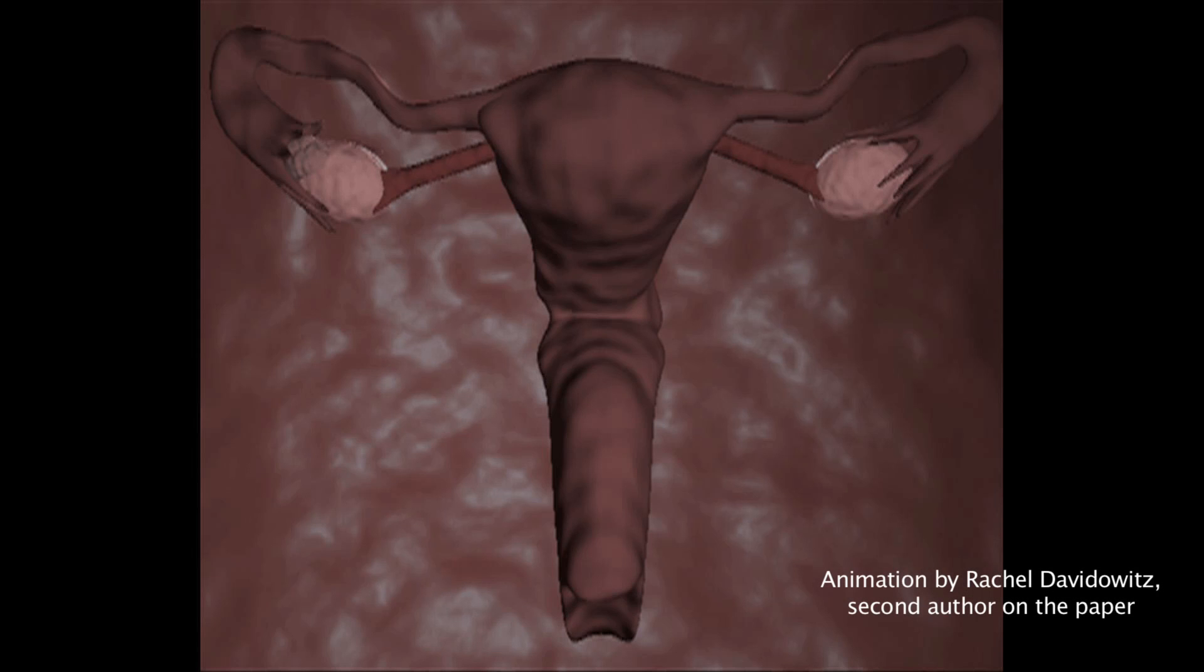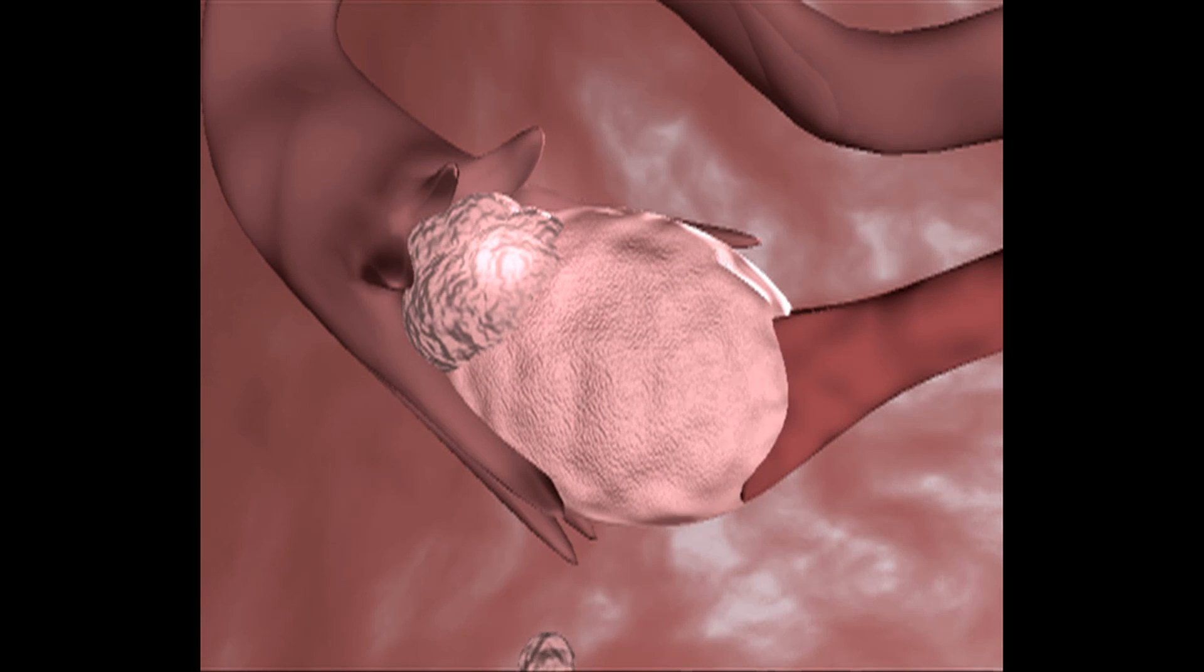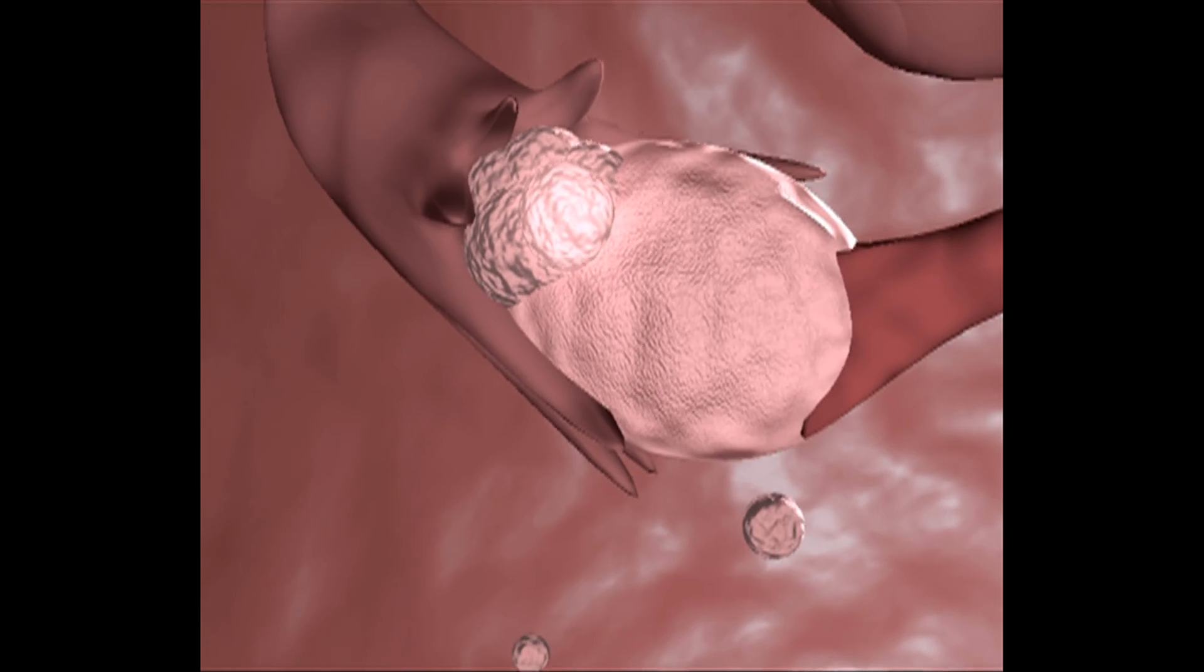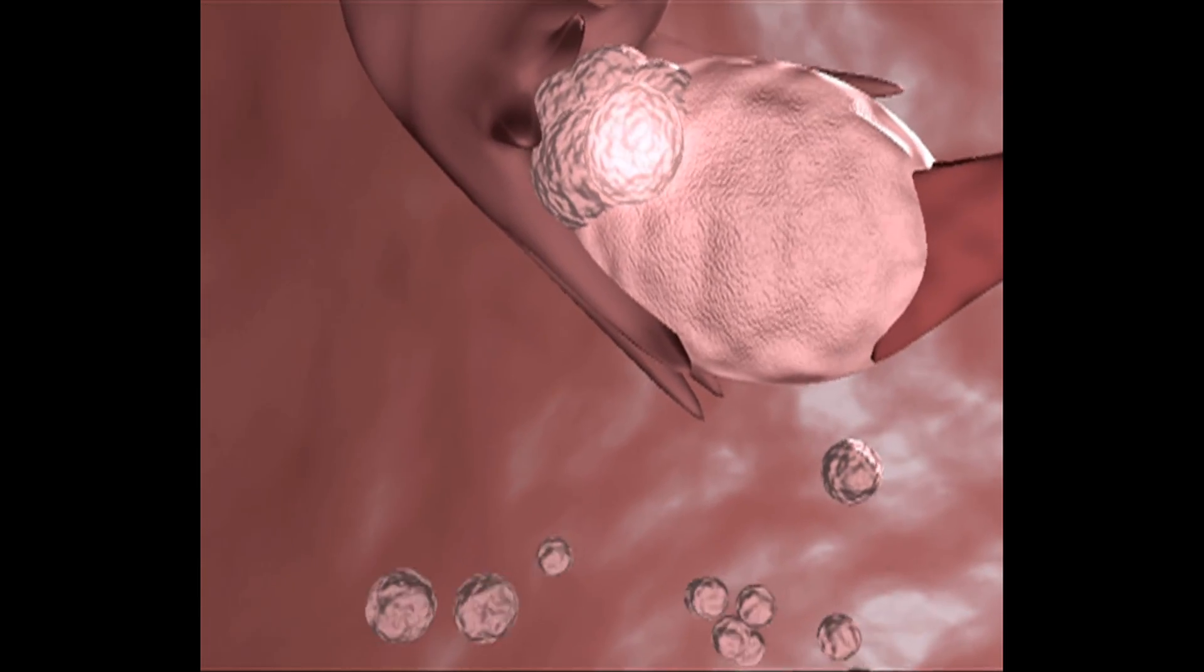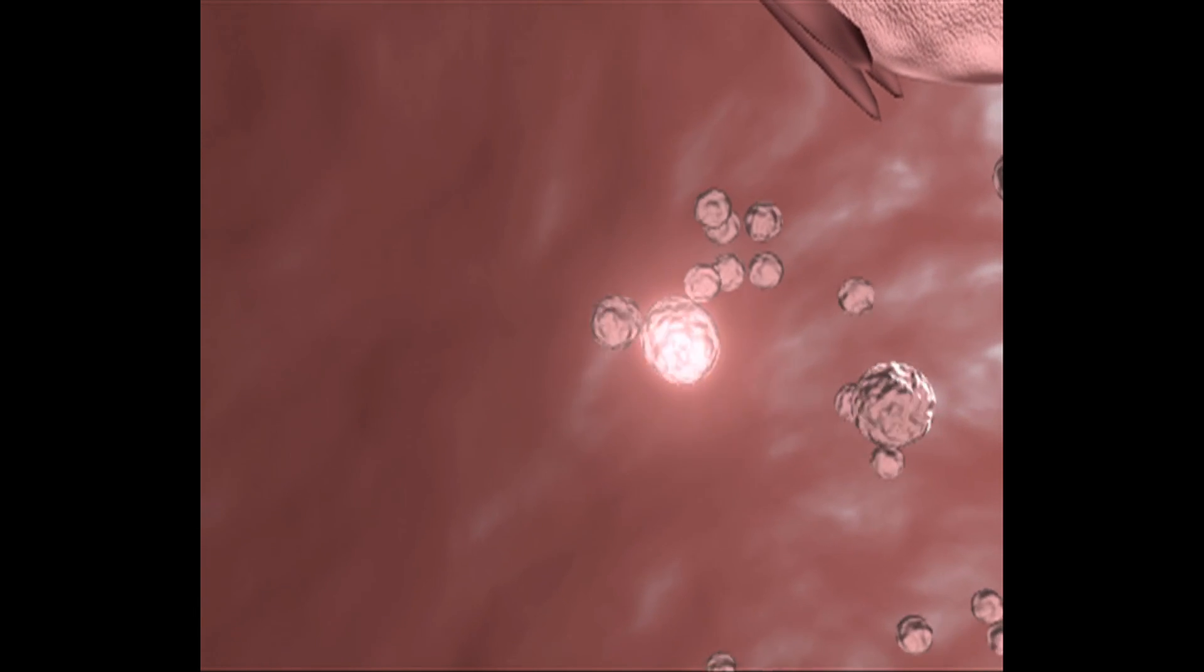In this animation, we see the uterus, fallopian tubes, and ovaries in a space called the peritoneal cavity. A close-up of the left ovary reveals a tumor that has formed. A cluster of tumor cells breaks off and floats into the peritoneal cavity, joining other clusters that have already broken off.